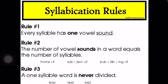Rule number one. Бірінші ереже. Every syllable has one vowel sound. Әр бұғынның бір дауысты дыбысы болады.